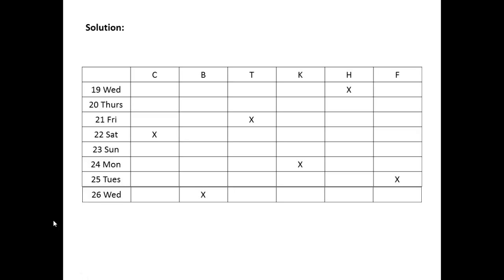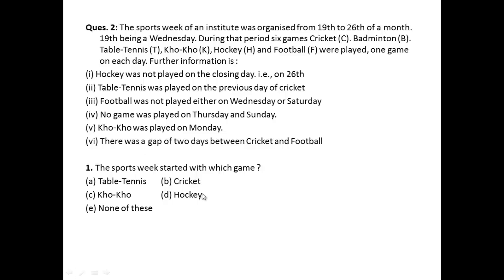Here is the complete table: cricket is played on the 22nd, which is Saturday; badminton is played on the 26th, Wednesday; table tennis is played on the 21st, Friday; Thursday the 20th has no game; Sunday the 23rd also has no game; cocoa is played on Monday; hockey is played on Wednesday the 19th; and football is played on Tuesday the 25th.